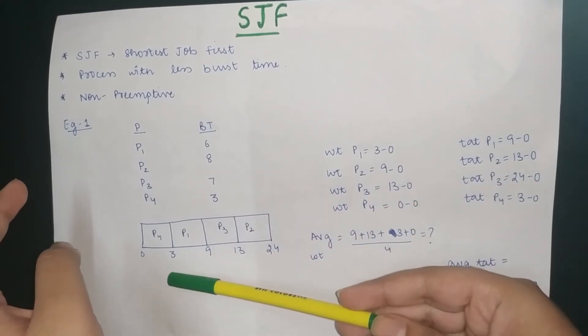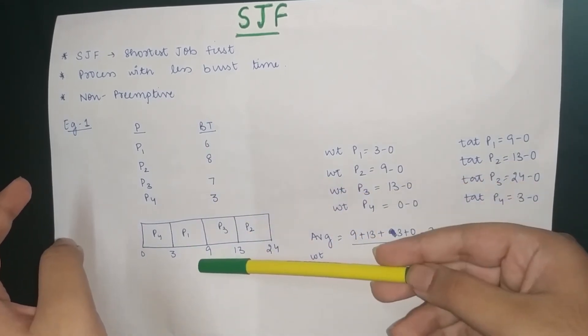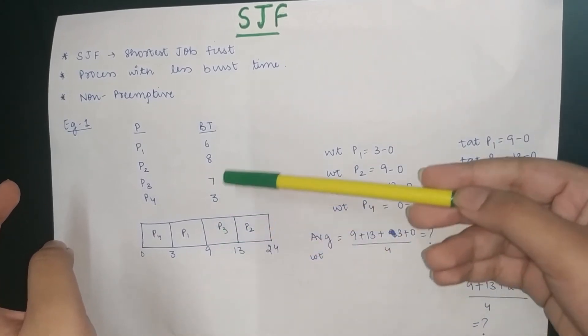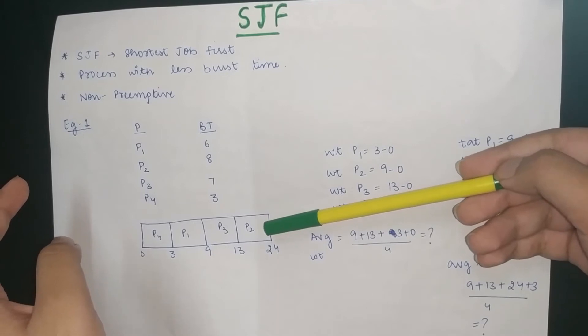First, P4 will execute. After P4, then P1 will execute. After P1, then P3 will execute. After P3, then P2 will execute.